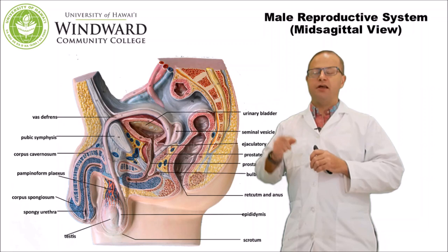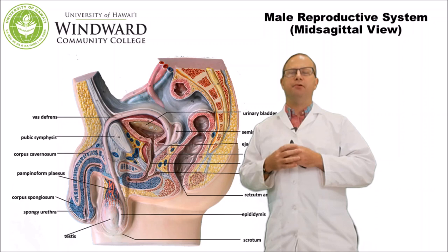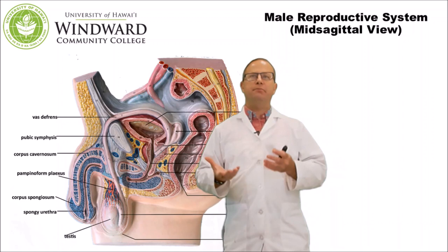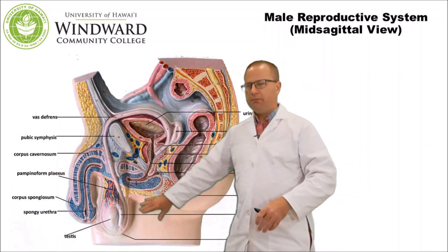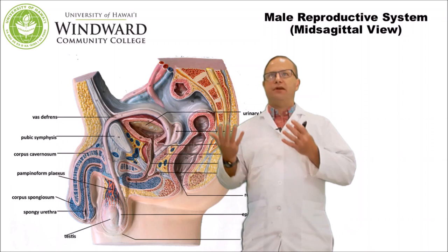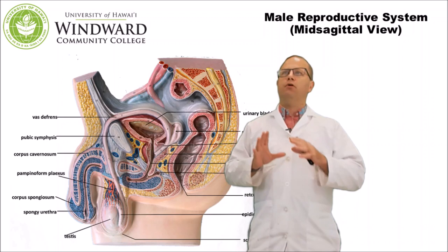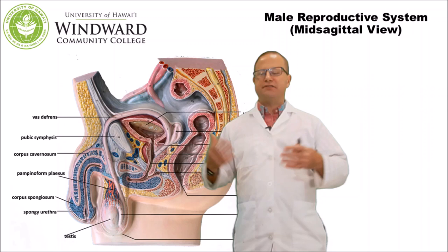The male reproductive system has basically five functions. First, it has to produce gametes. The male gametes are called spermatozoa or sperm, and they're made in the testis. The second function is to make the male hormone testosterone, which is also made in the testis. Testosterone is important for the maturation of sperm, male libido or sex drive, and establishing male secondary sex characteristics such as growth of hair and muscle.